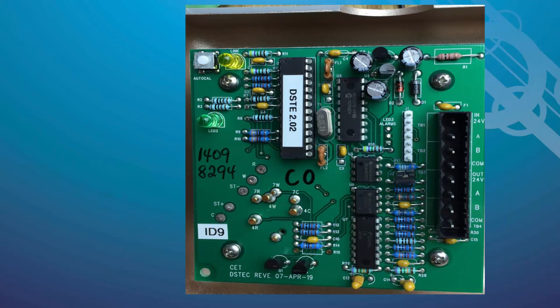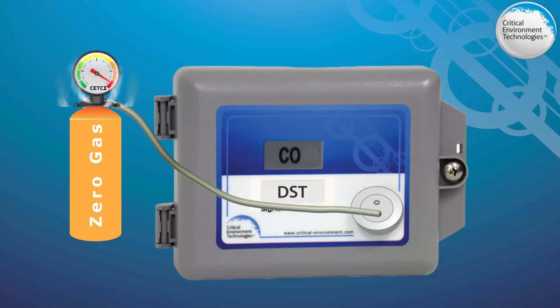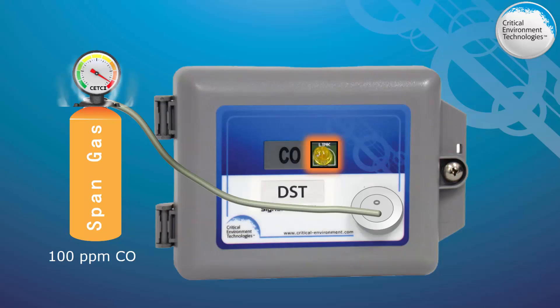After 2 to 3 minutes of flowing zero gas, press the AutoCal push button inside the DST once to enter calibration mode while the zero gas is still flowing. The LED will flash amber, indicating the null calibration is complete. Quickly remove the zero gas and attach the span gas cylinder and flow the gas within 5 seconds of having pushed the AutoCal button. The calibration will continue and the LED will flash alternating red and amber for approximately 3 minutes. When it turns solid red, the calibration is complete.